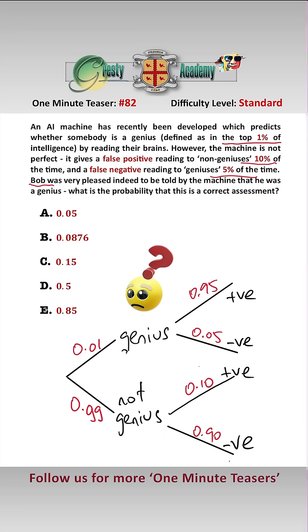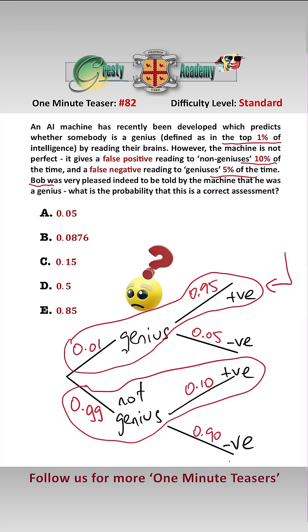So to see if Bob is genuinely a genius, we have to look at this here, and this here, and therefore we have that the probability that he is actually a genius, i.e. on this path here,